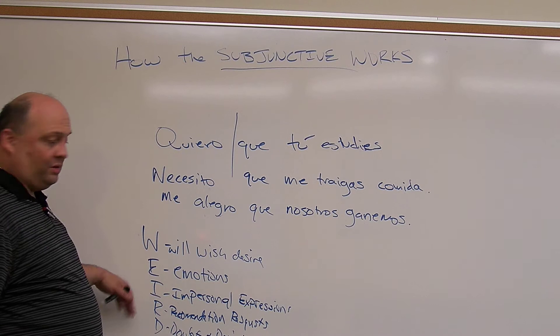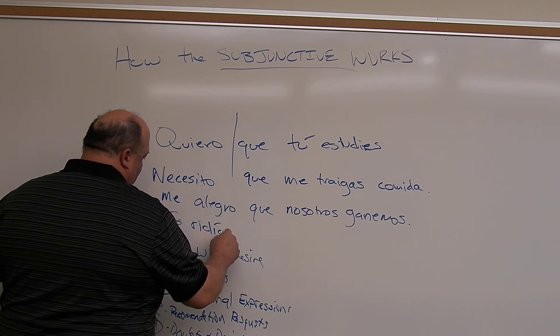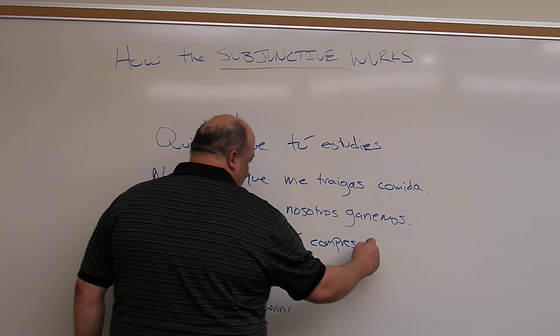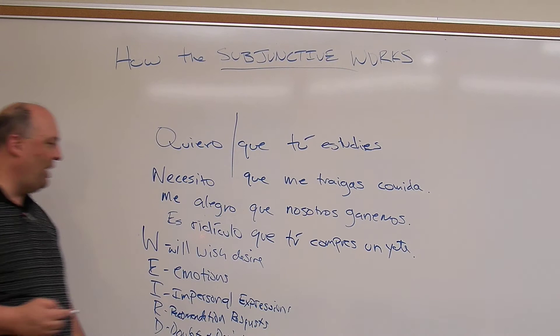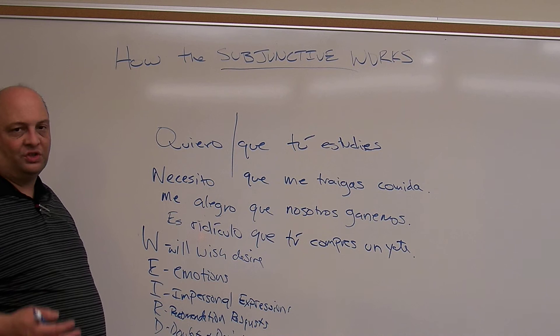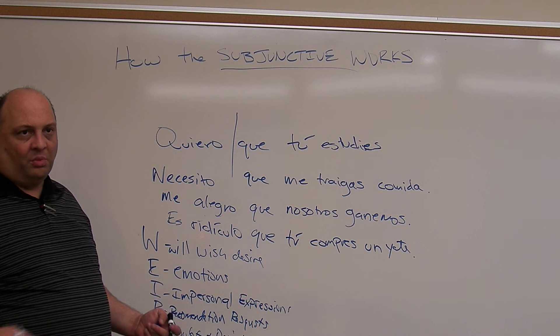For impersonal expressions, this is where we use 'es.' Es ridículo — it is ridiculous — que tú compres un yate — 'It's ridiculous that you buy a yacht.' Es ridículo que tú compres un yate — that's an impersonal expression. Es bueno, es malo, es dudoso — these all follow the same pattern. Es cierto actually does indicate certainty, so that wouldn't require the subjunctive — but it is one of those impersonal expressions.